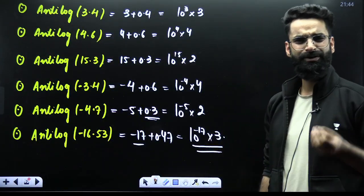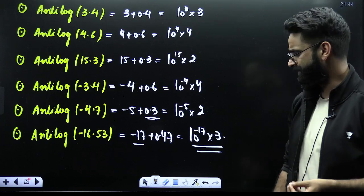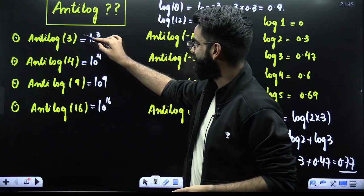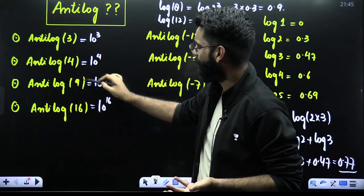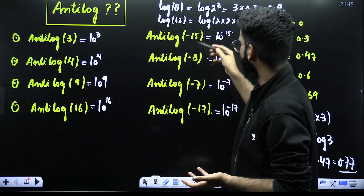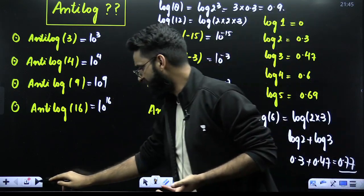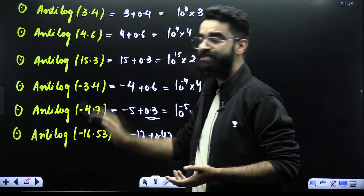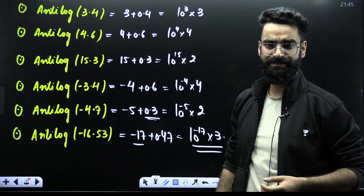This is how you can calculate NT logs of different numbers. These are NT logs of normal numbers like 3, 4, 9 — and similarly for negatives. When it comes to decimals, this is how we calculate NT logs.